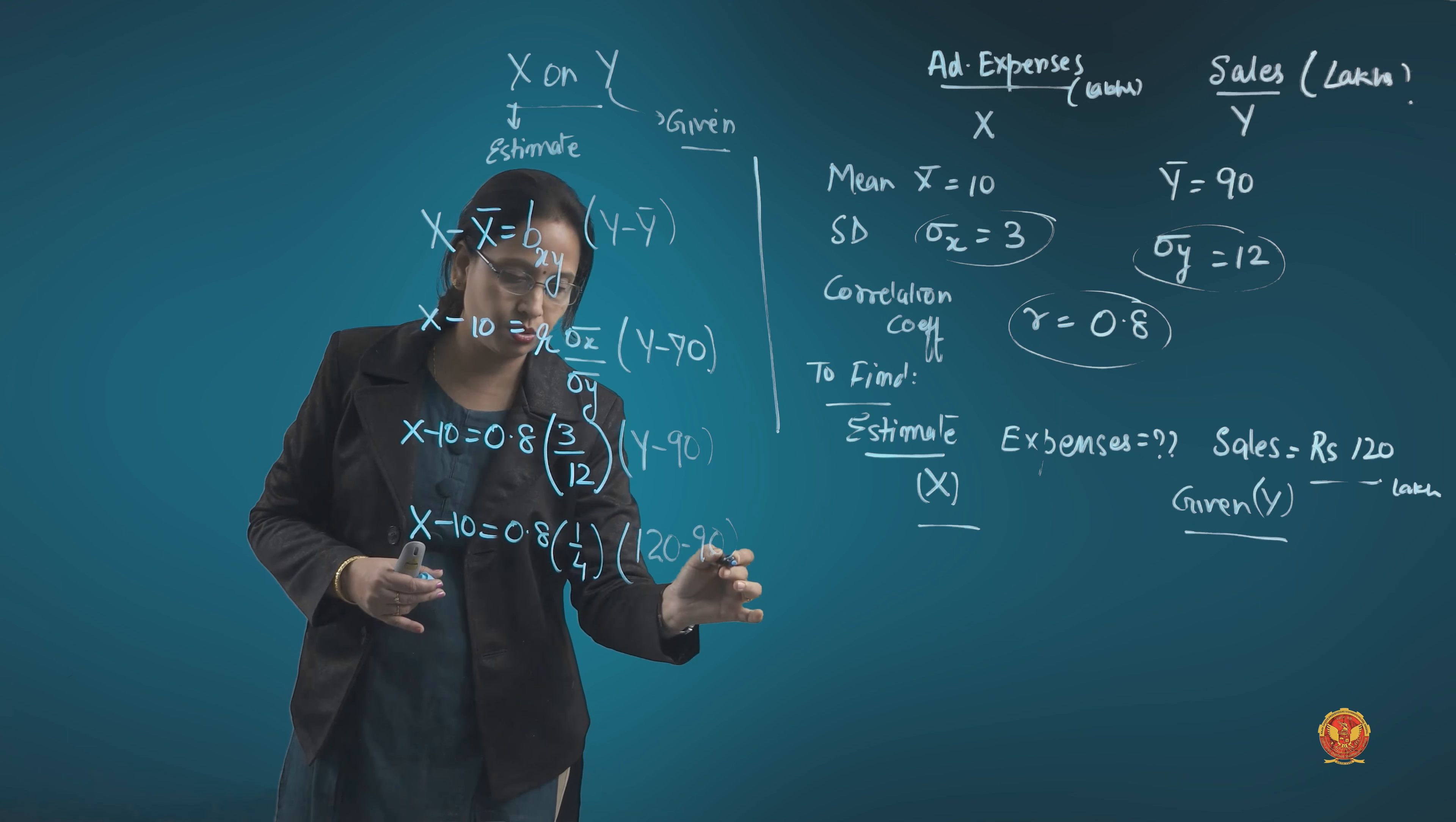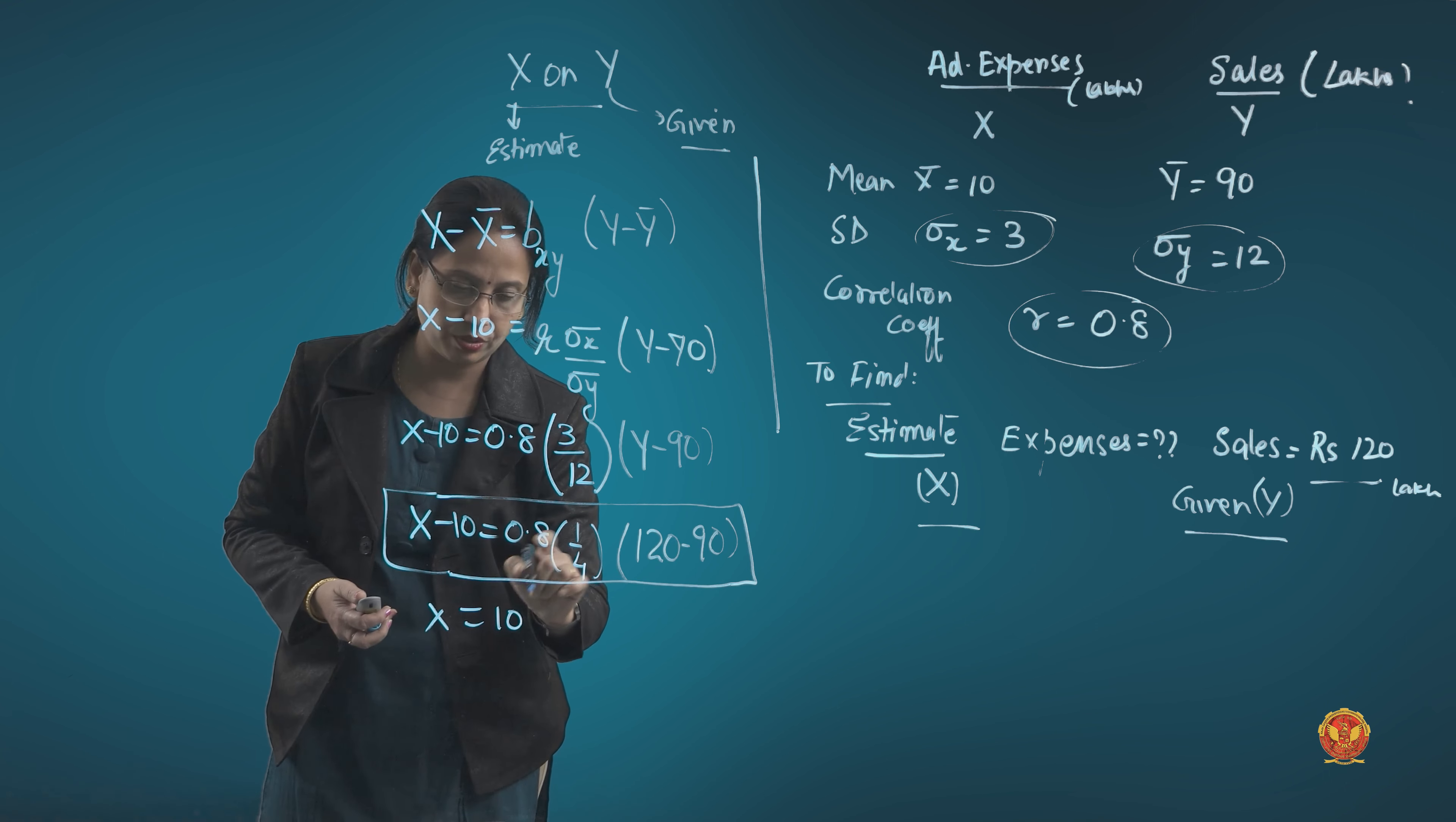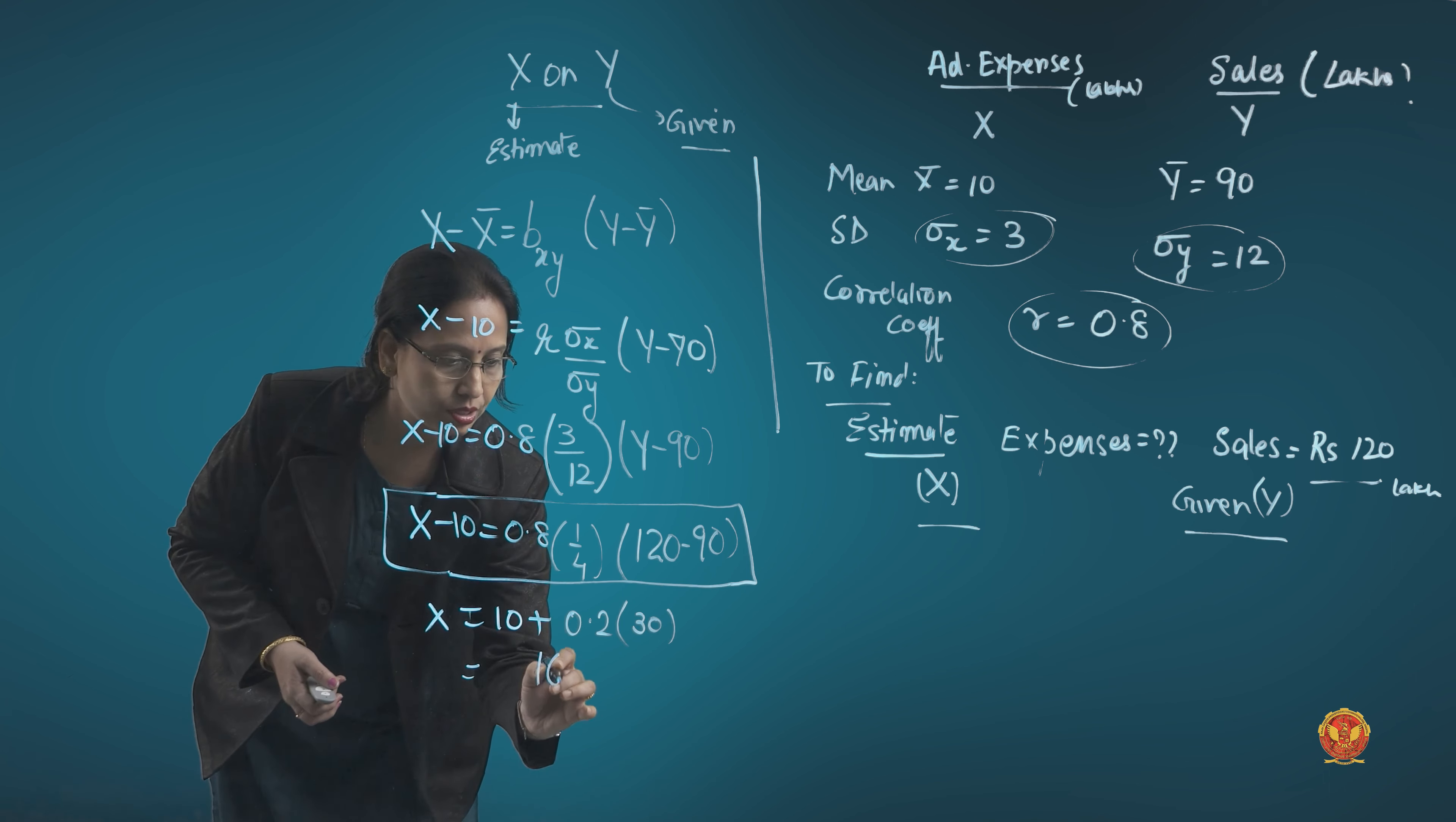See, I have placed all the values so that the calculation and time can be saved. Every time we have to take care of time in exams. Put the value of y, 120, over here. Do this calculation. It becomes 0.2 multiplied by 30. The calculations also take time, so better we put the value of y as 120 and do this calculation. We get the value of x equal to 16. 10 plus 6 equals 16.